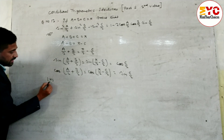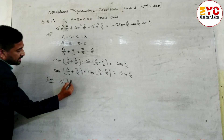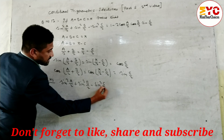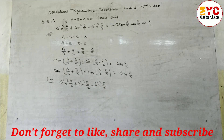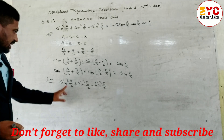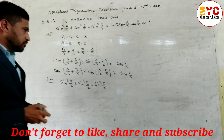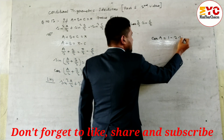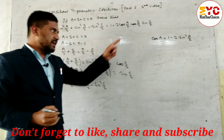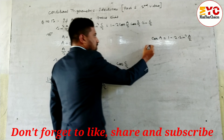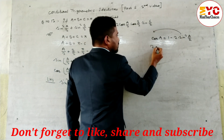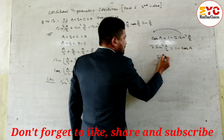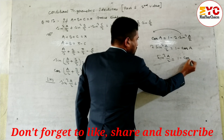Now we take the LHS: sin square a by 2 plus sin square b by 2 minus sin square c by 2. Using the cos A formula — cos A equals 1 minus 2 sin square(a by 2) — we find sin square(a by 2) equals (1 minus cos A) by 2.